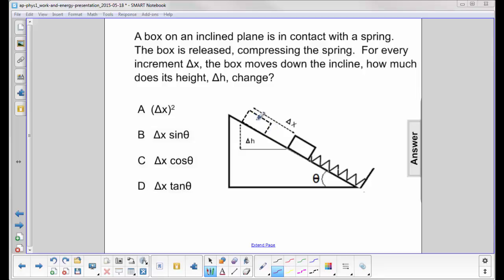We then release the box. The box slides down, compressing the spring to this position, this is the compressed position. For every increment delta x that the box moves down the incline, how much does its height delta h change?